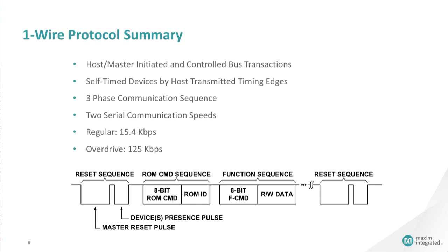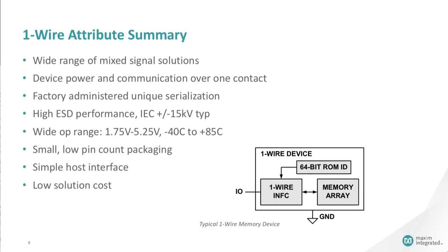The key advantages of one-wire technology are: It provides a wide range of mixed-signal solutions. Device power and communication happen over one contact. Factory-administered unique serialization. High ESD performance, up to 15 kilovolts typically by IEC. Wide operating range, 1.75 volts to 5.25 volts from minus 40 degrees C to plus 85 C.